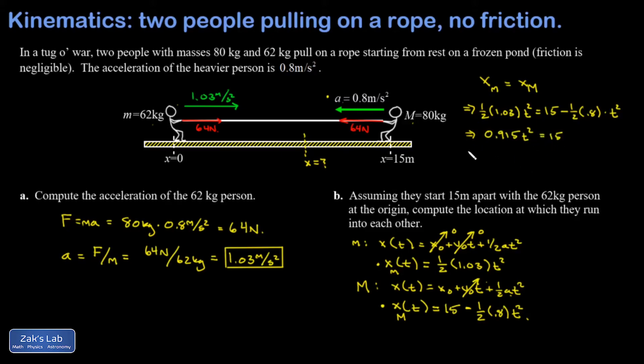Then we divide by the coefficient of t squared and square root the result, and we're going to keep the positive answer here since the experiment started at t equals zero. I end up with a total time of 4.05 seconds.